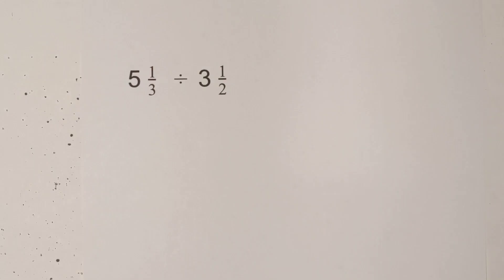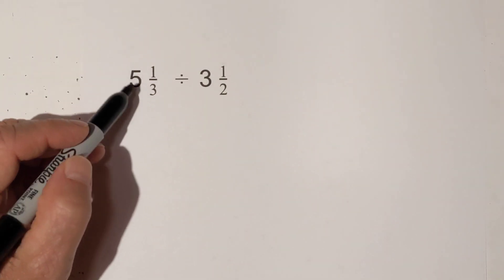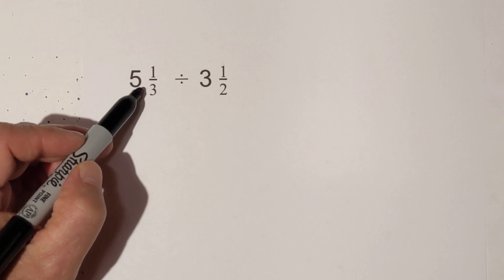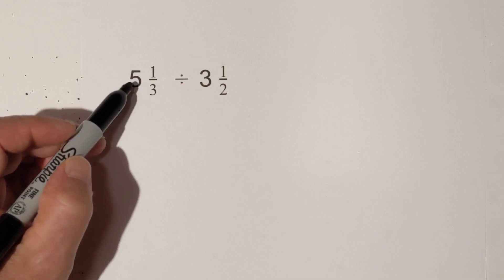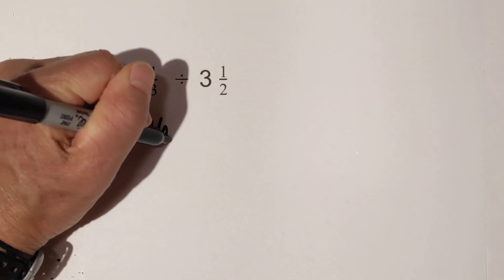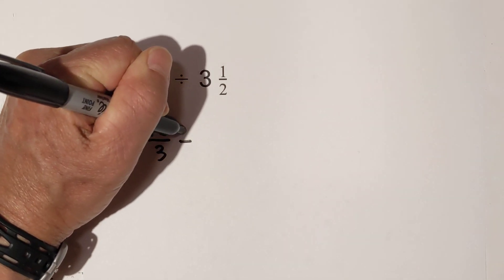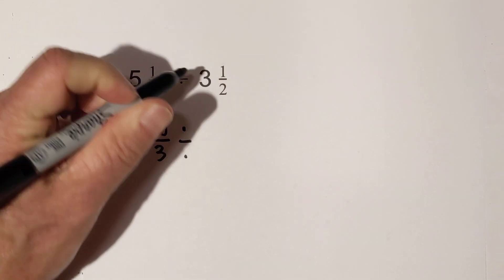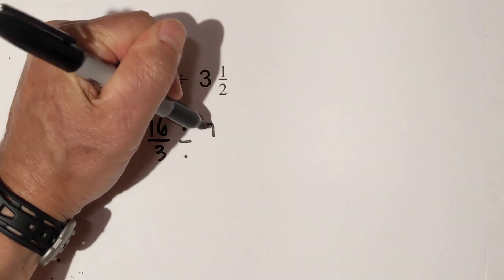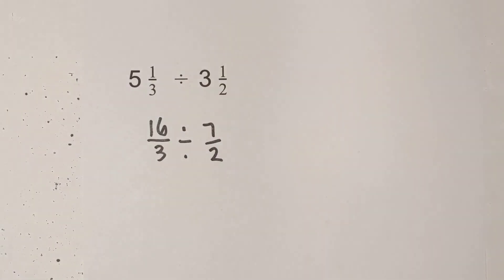For division, just like multiplication, we start by converting to improper fractions. Five times three is fifteen, plus one is sixteen — so sixteen over three. Divided by: two times three is six, plus one is seven — so seven halves.